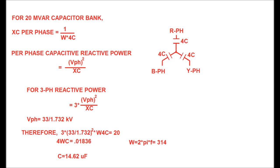For three phase, the reactive power supplied by the capacitor bank is 3 × V_phase² / XC. The line-to-line voltage is 33 kV, therefore phase voltage = 33 / 1.732 kV.